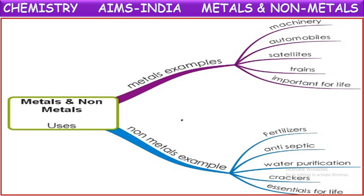Uses of metals and nonmetals: metals have so many uses - they are used in making machinery, automobiles, satellites, vehicles, trains, and are important for many living purposes. Nonmetals are also used in fertilizers, antiseptic solutions (sulfur is used in that), water purification (chlorine is used), and in crackers for getting different colors. Some nonmetals are essential for life - oxygen for breathing, and nitrogen is very important for plants.